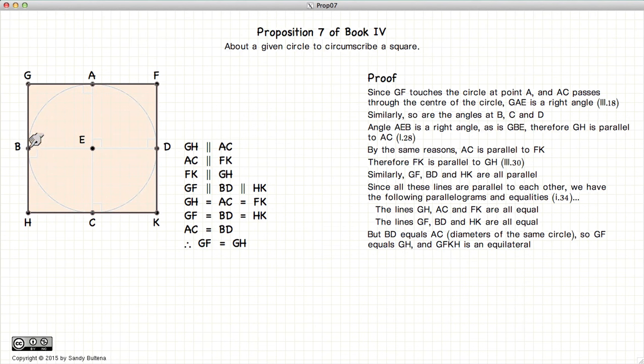But since BD and AC are equal, and both equal the sides of the quadrilateral, all the sides of this quadrilateral are equal. And we have an equilateral parallelogram.